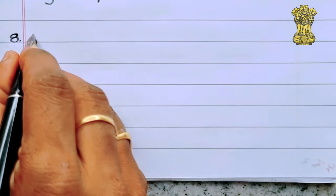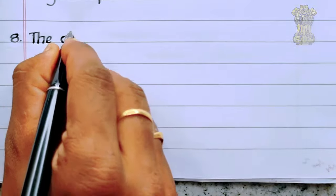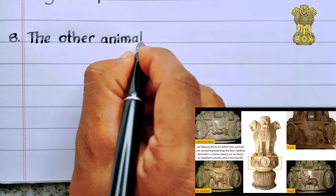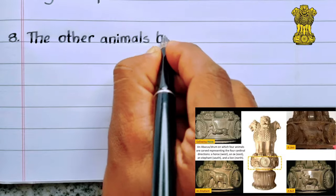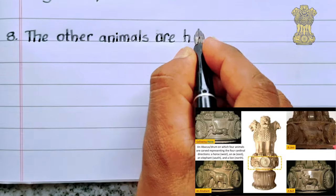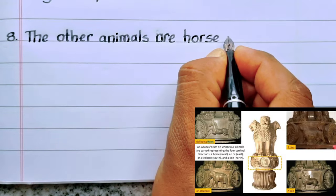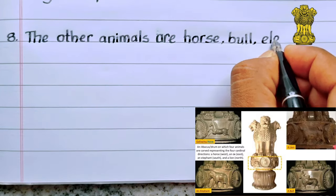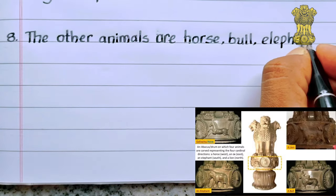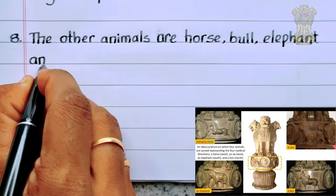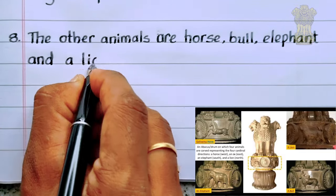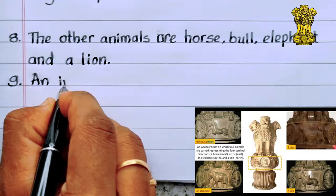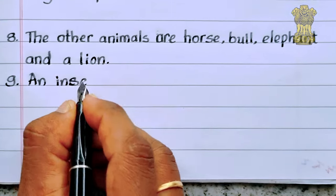Eighth point: the other animals are horse, bull, elephant, and a lion.